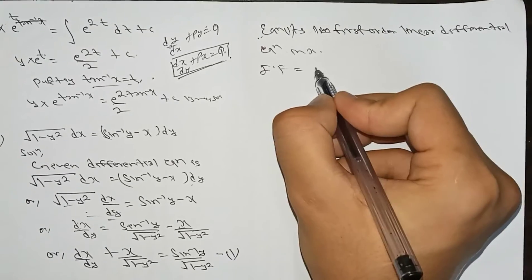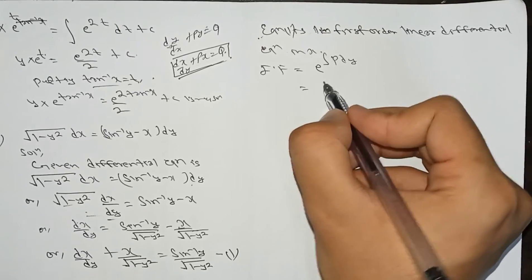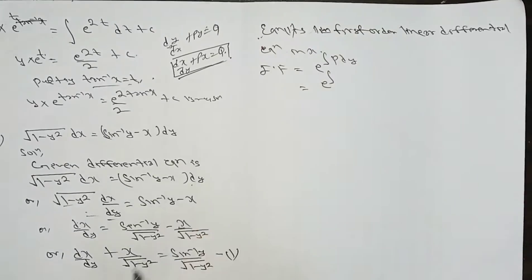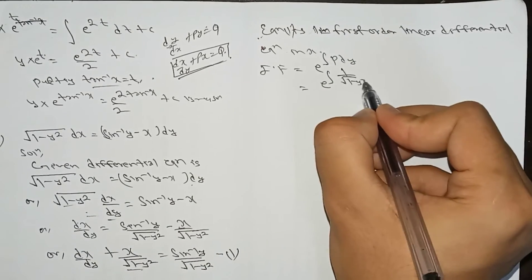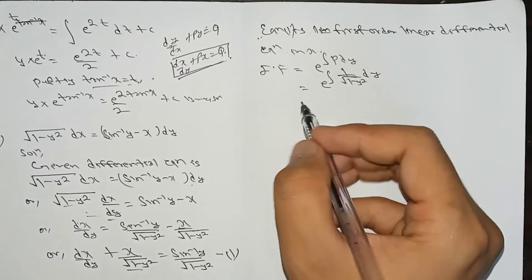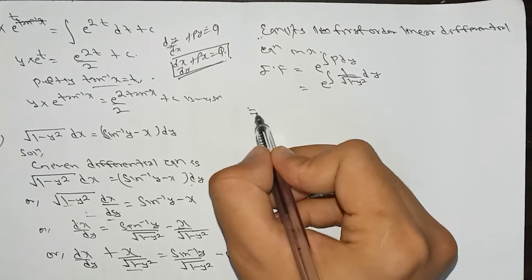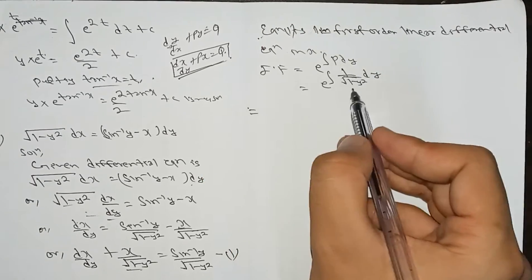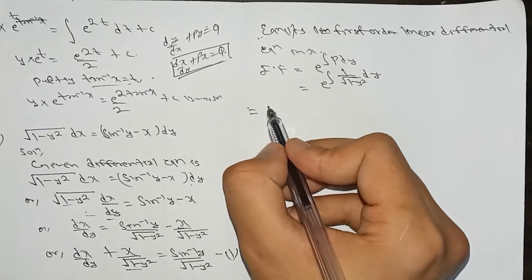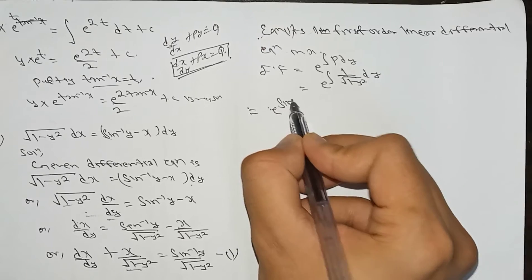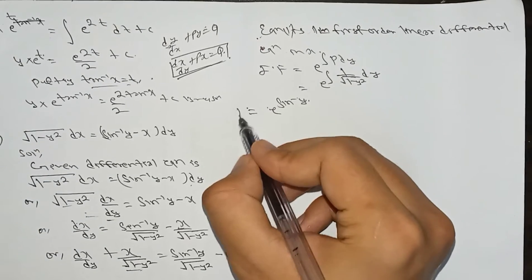From equation 1, we identify P = 1/√(1 - y²). The integrating factor (IF) is e^(∫P dy) = e^(∫1/√(1 - y²) dy). Since the integration of 1/√(1 - y²) is sin⁻¹y, the integrating factor is e^(sin⁻¹y).